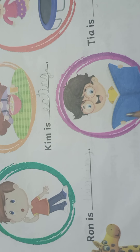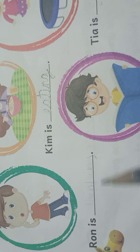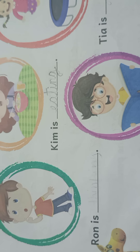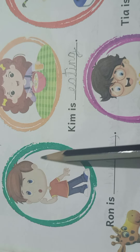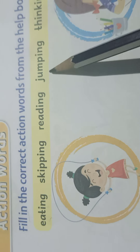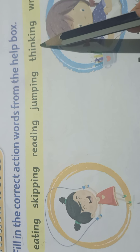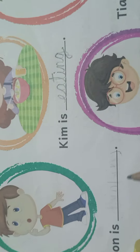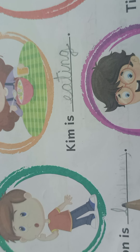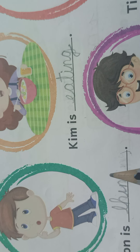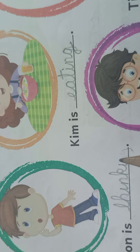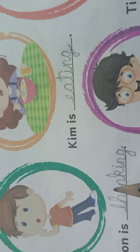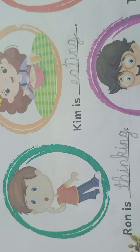Now here is Ron. Ron is — what is he doing? This picture shows Ron is thinking. So you can see T-H-I-N-K-I-N-G, thinking. Ron is thinking.